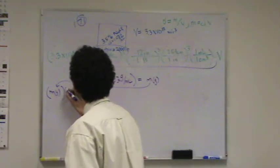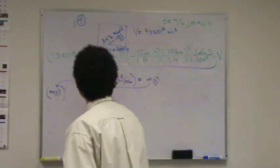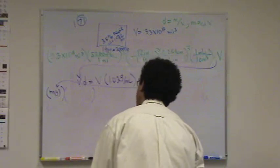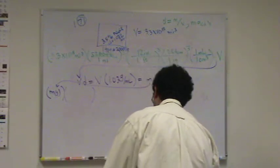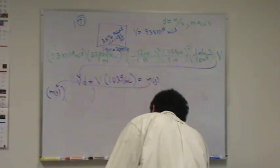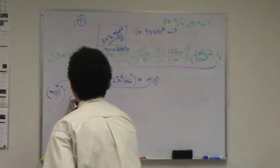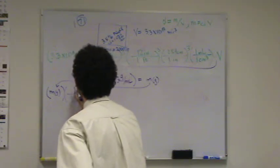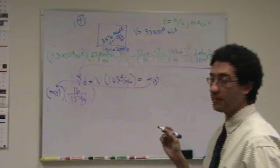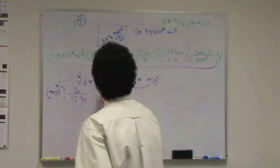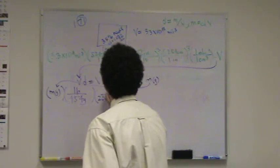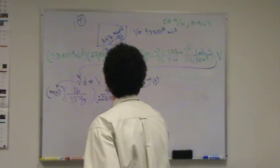So grams. This is one I might look up in the back. This is one I always forget. I think it's 454 grams per pound. That's right. It's 454 grams in one pound. So now I'm at pounds. And then I go 2,000 pounds for every ton. Boom.